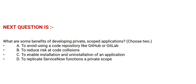Next question: What are some benefits of developing private scope applications? Choose two options. Option A: to avoid using a code repository like GitHub or GitLab. Option B: to reduce risk of code collisions. Option C: to enable installation and uninstallation of an application. Option D: to replicate ServiceNow functions in a private scope. The correct answer is Option B.